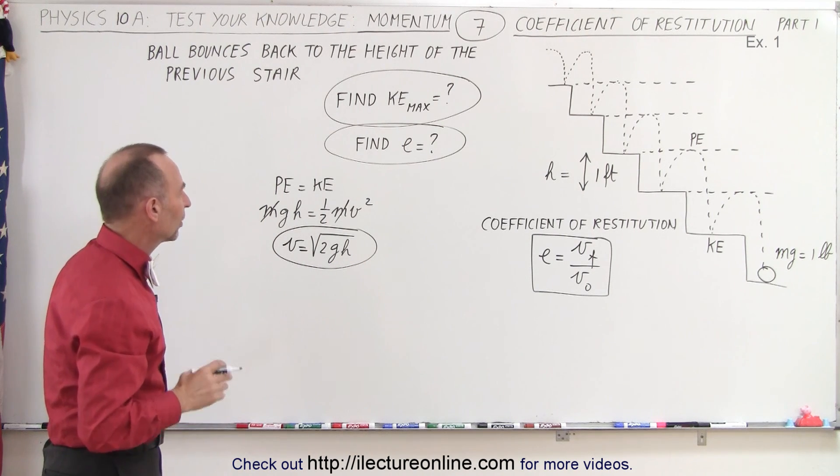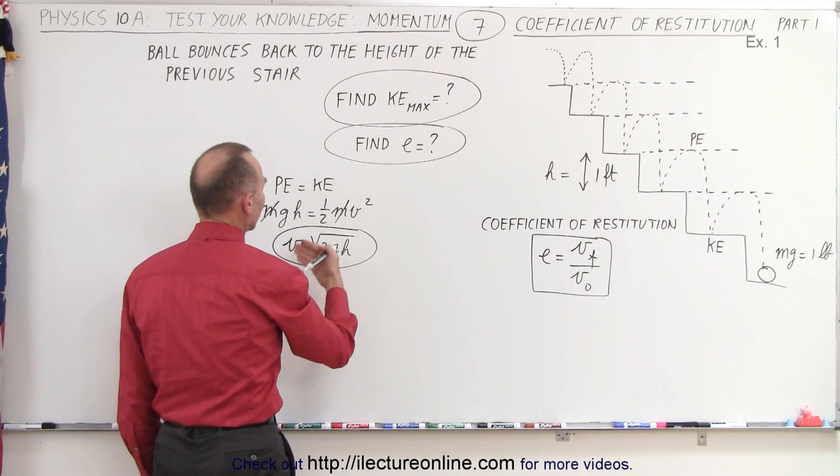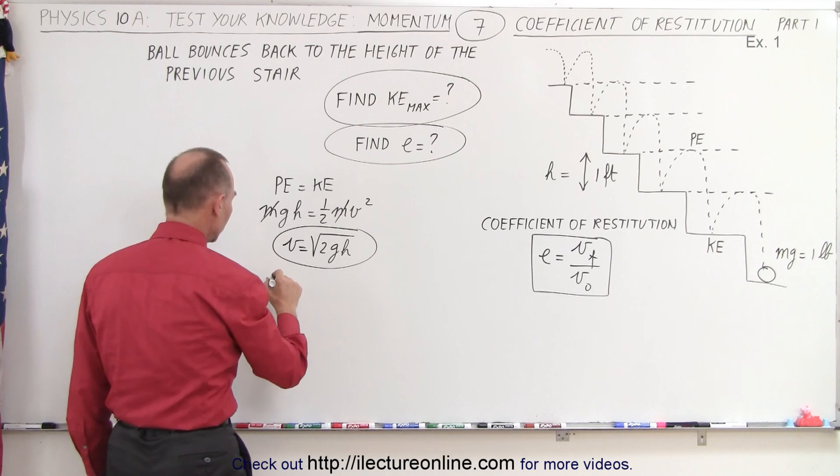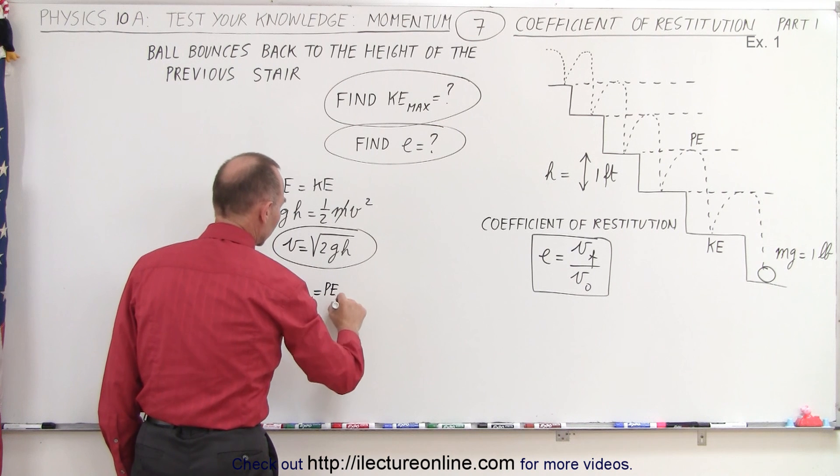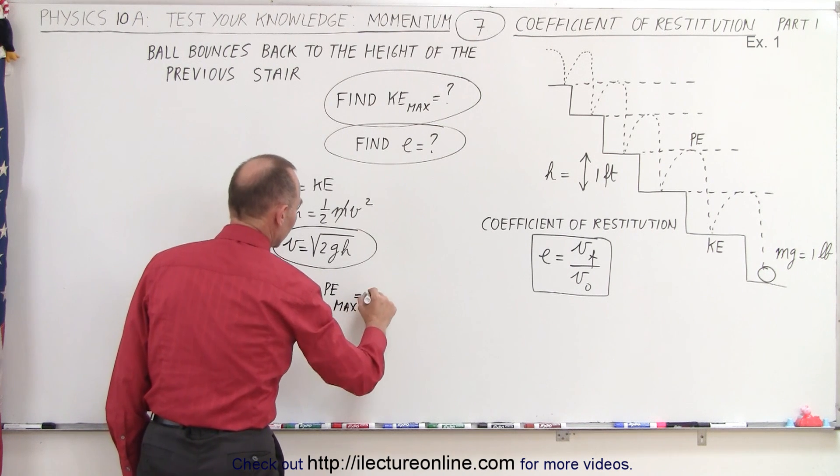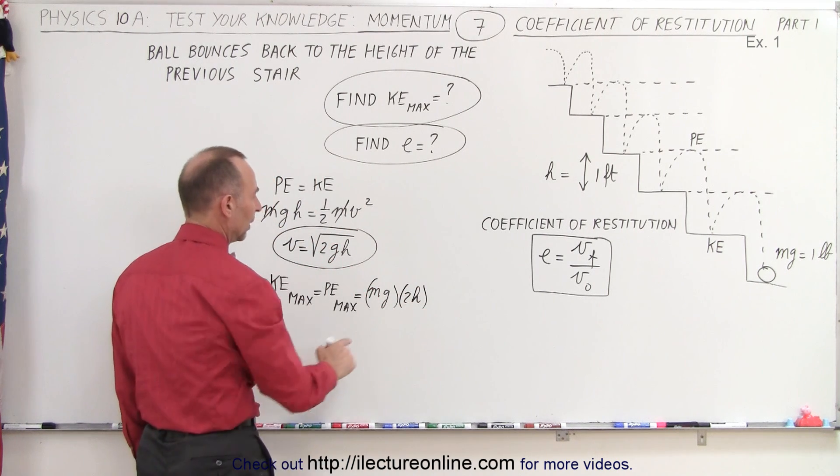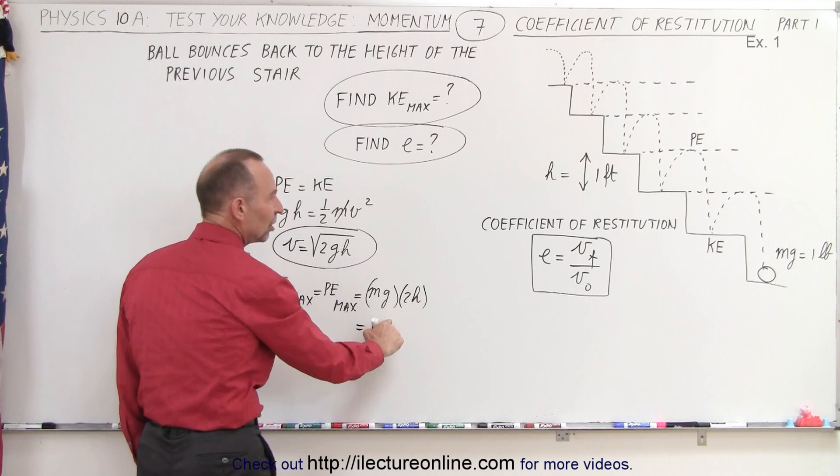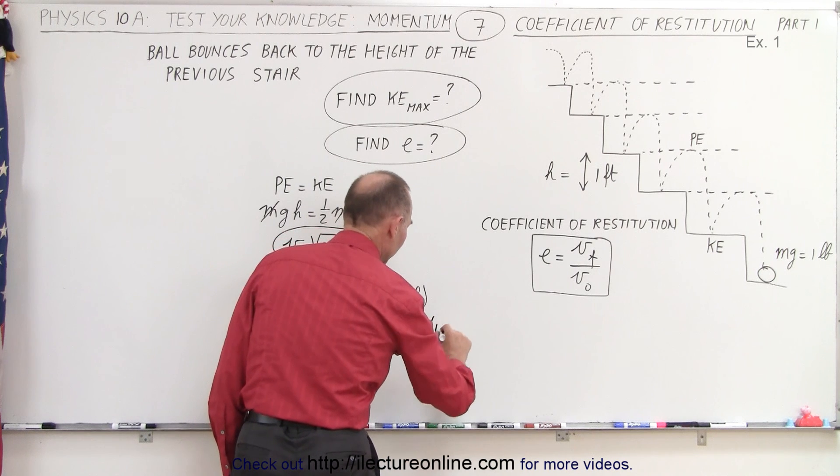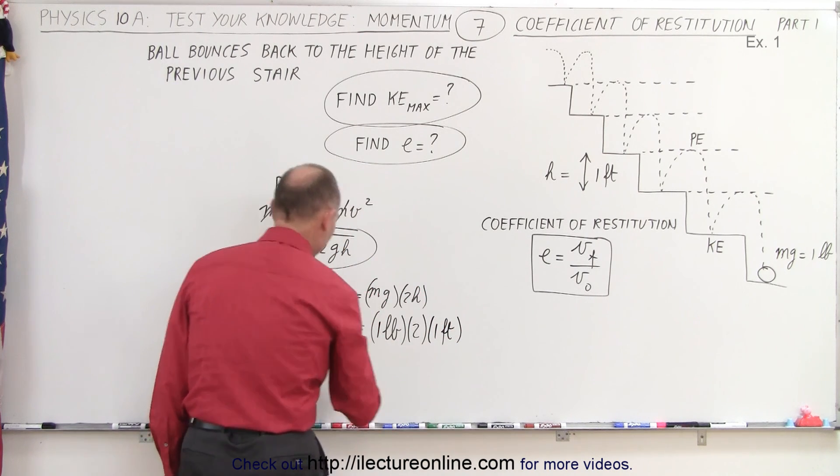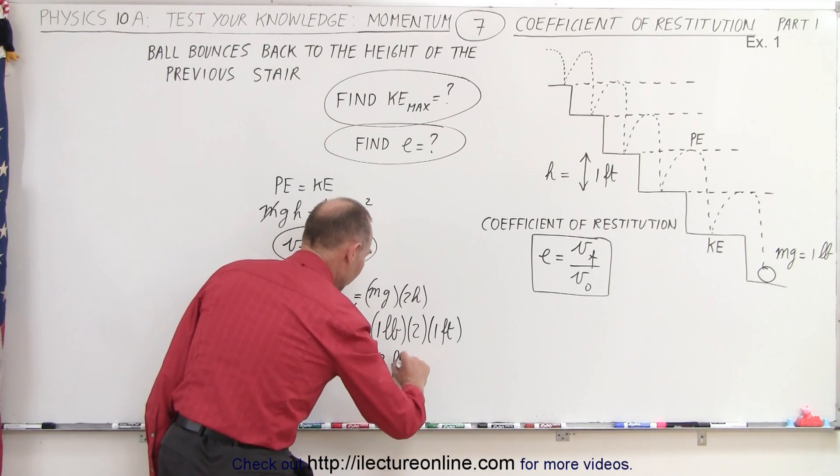So what we can do then is we can say that the maximum kinetic energy would equal the maximum potential energy, which would be equal to mgh. So in this case, we can say that the kinetic energy max is equal to the potential energy max, which in this case is equal to mg times 2h, twice the height of the step. And so knowing that the mg is equal to one pound, and when we multiply by times twice the height, and the height is equal to one foot, we can see that the maximum potential energy, which is equal to the maximum kinetic energy, would be 2 foot pounds.